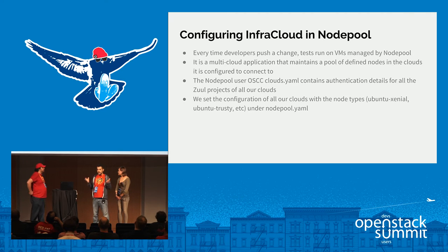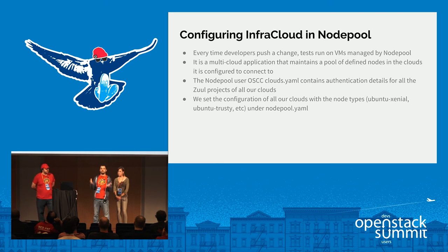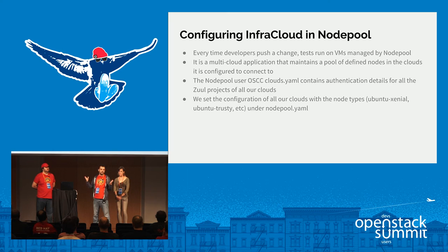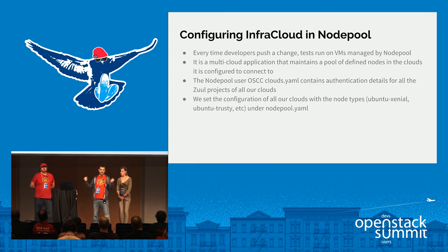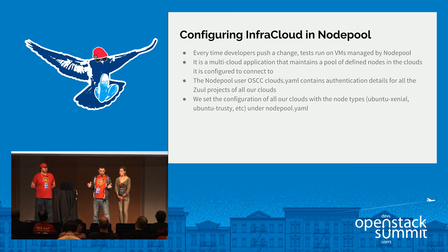Once we have everything configured — monitoring, metrics, resources bootstrapped — we need to configure the cloud for NodePool usage. NodePool is not black magic. Every time developers push a change, the tests run on VMs created by NodePool. NodePool is a multi-cloud application that talks to multiple cloud providers and maintains a pool of defined resources and nodes. NodePool has access to all the donated cloud providers: OVH, Internap, Rackspace — we're very grateful to all of them. The NodePool service has all authentication details to those clouds so it can access and spin up nodes.